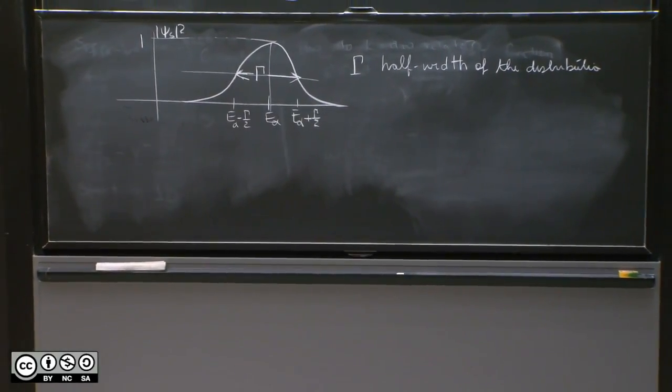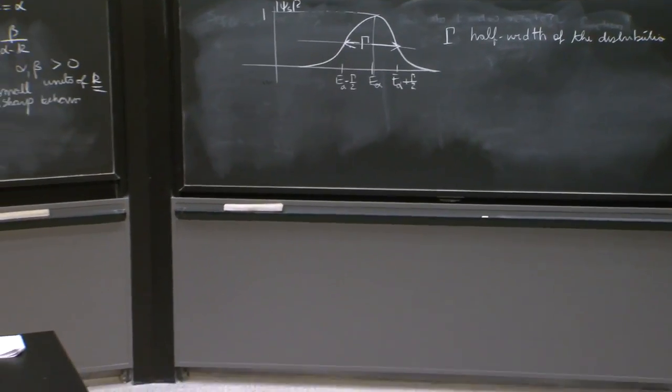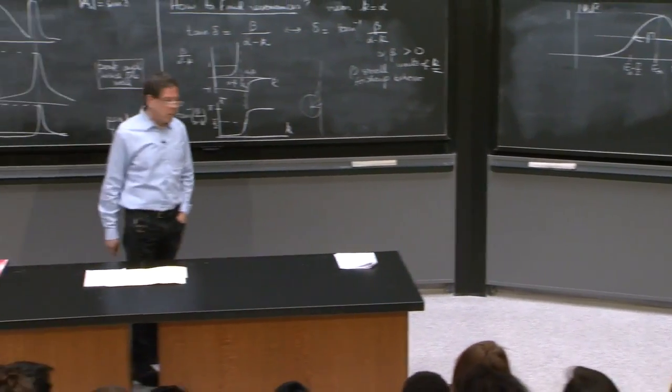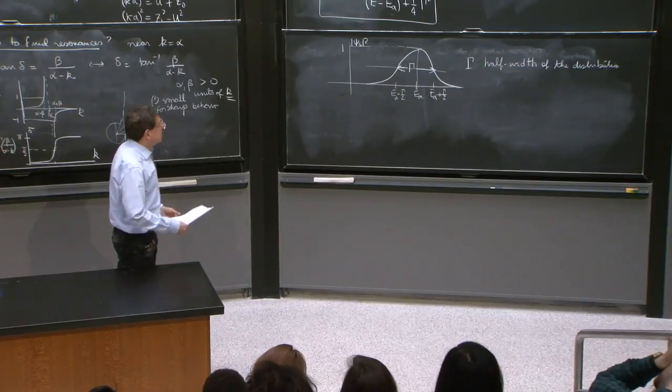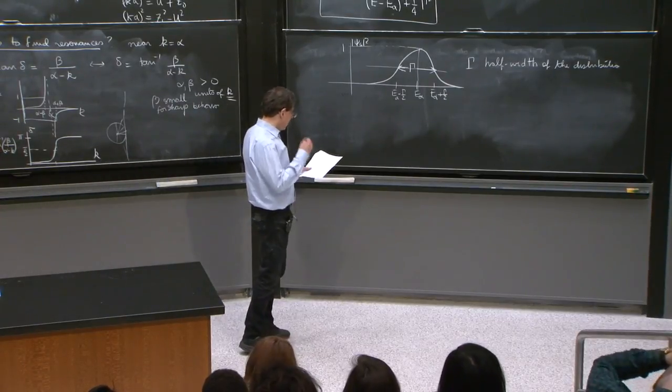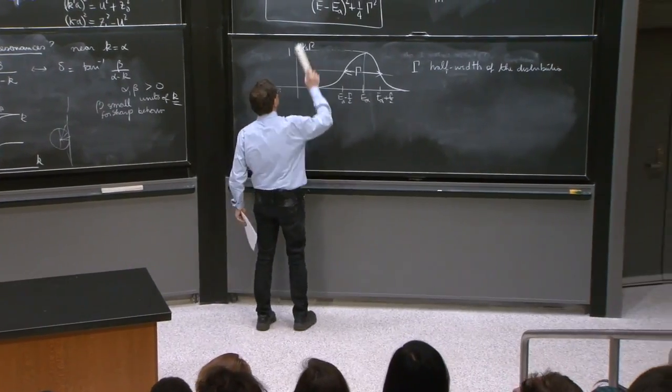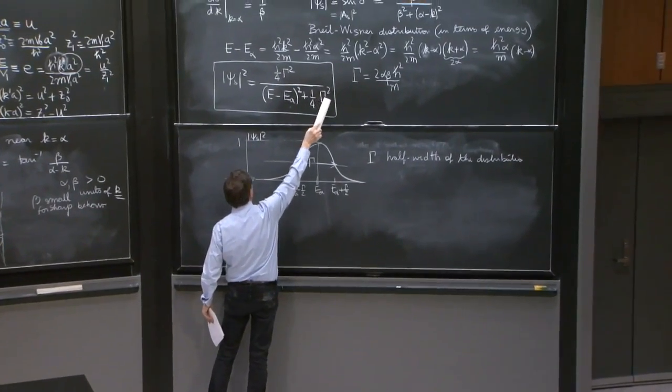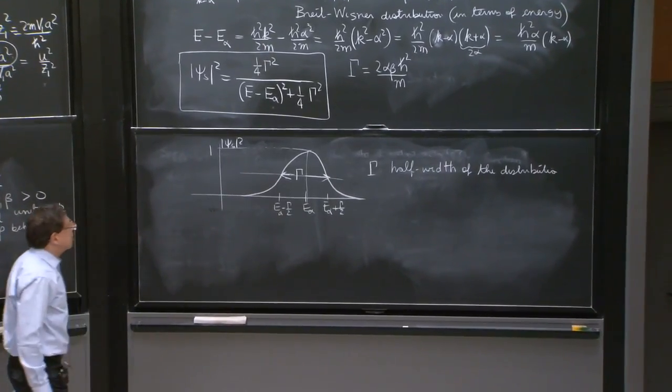What is gamma? Well, it seems to have a beta in there, alpha. It's a little unclear what gamma means. So let's try to make sense of it. Gamma has units of energy, because this term has units of energy, and therefore the other term must have units of energy as well.